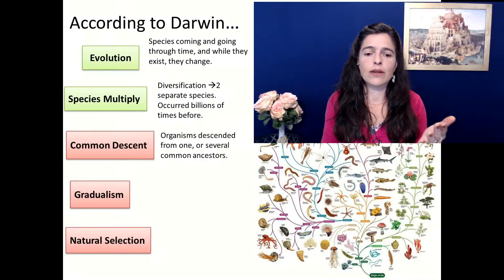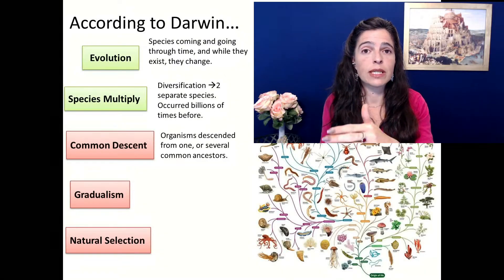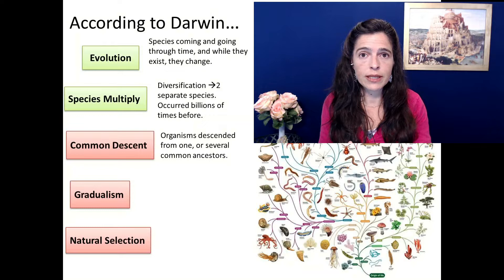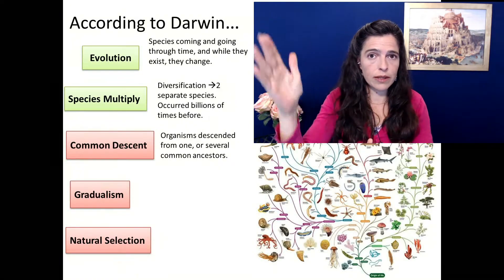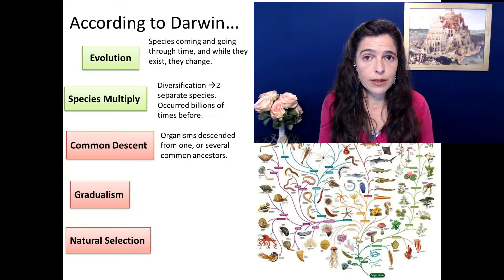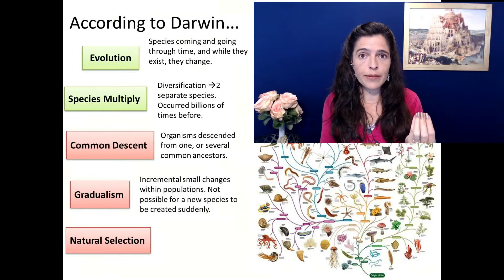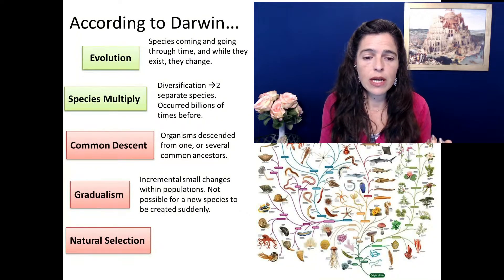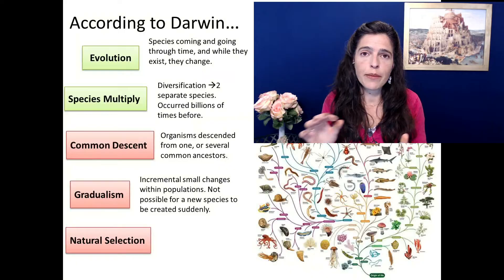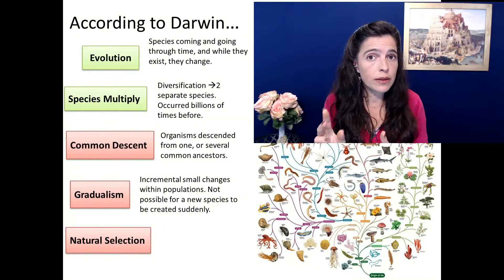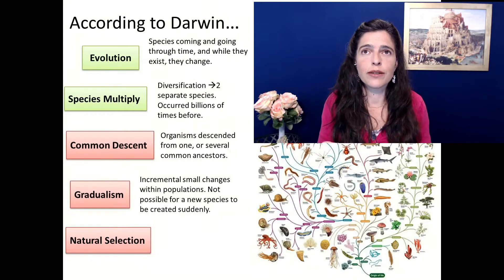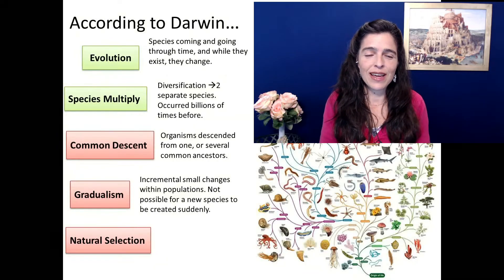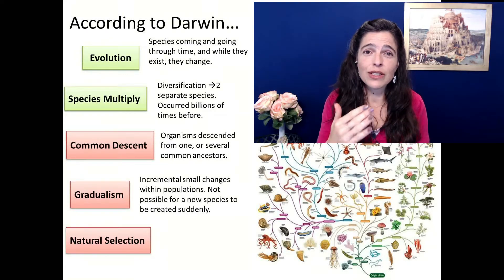The idea of common descent is that ultimately every single living organism comes from a common ancestor, or sometimes several, depending on how they mixed along the line of evolution. Gradualism is one of the main important characteristics of Darwin's theory — that changes happen in very small incremental stages, one random mutation at a time, and it's not possible for a species to sprout out of nowhere.